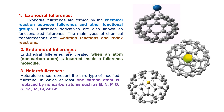Endohedral philorenes are created when a non-carbon atom is inserted inside the philorene. When this non-carbon atom is inserted inside the philorene structure, it produces the endohedral philorene.